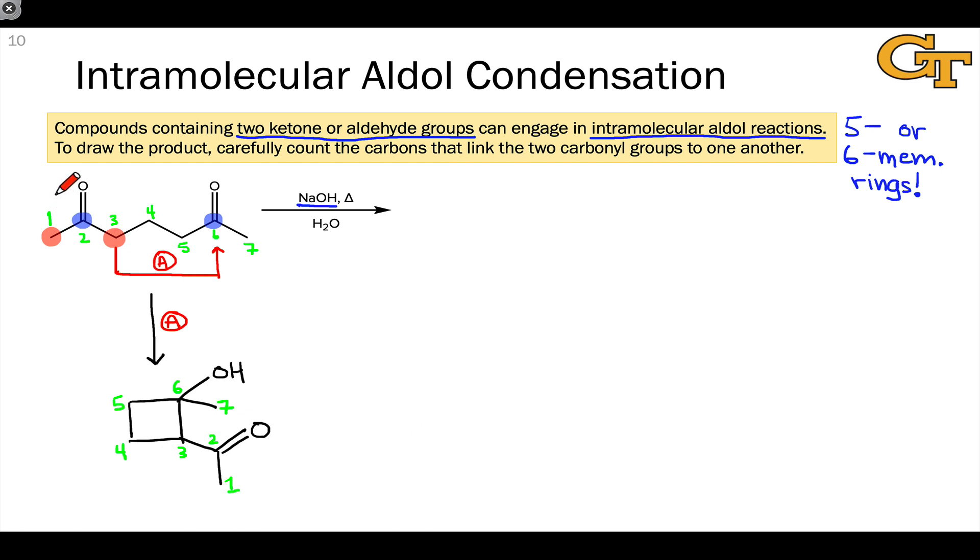The other possible product is derived from the use of carbon 1 as a nucleophile and carbon 6 again as electrophile. And this is equivalent by the way to using carbon 7 as the nucleophile and carbon 2 as the electrophile. Let's call this pathway B and I'm actually going to draw that to the right here for reasons that will become clear shortly.